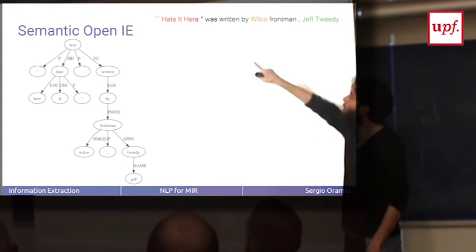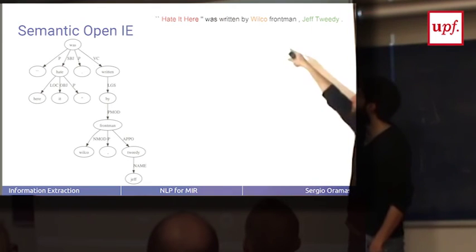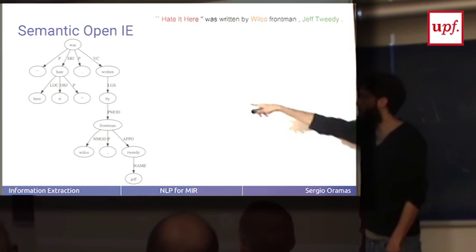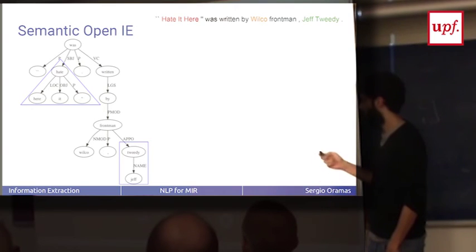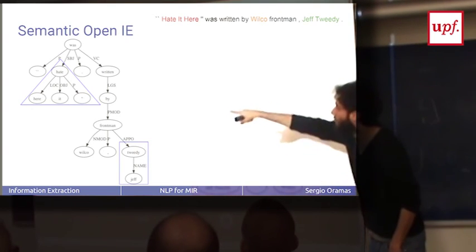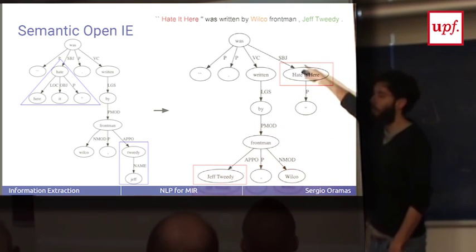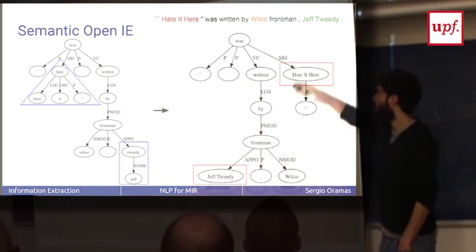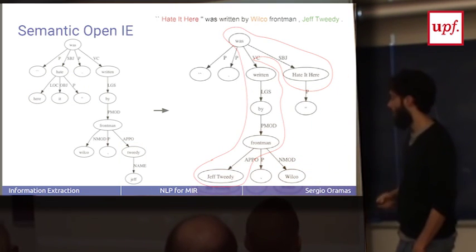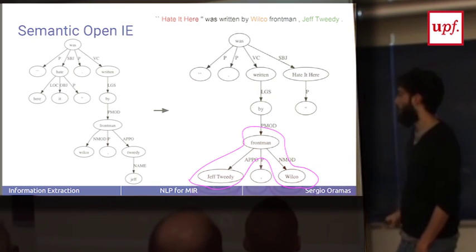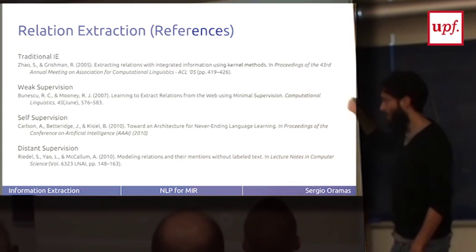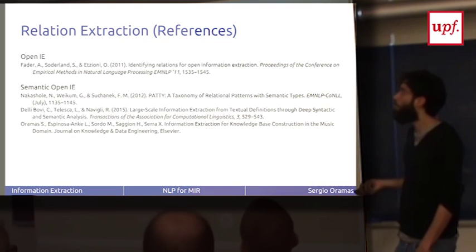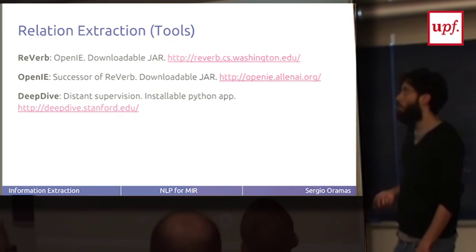We have also entity linking applied, so we know that Hated Here is an entity of type song, Wilco is an entity of type band, and Jeff Tweedy is an entity of type artist. What we do is we collapse the nodes in the dependency tree that belong to the same entity. These nodes, all Hated Here, we put as a single node. Jeff Tweedy, we put as a single node. Then we can find the path between the entities in the dependency graph: 'Hated Here was written by Jeff Tweedy' or 'Jeff Tweedy is the frontman of Wilco.' This is the idea. Here you have more references for different approaches for relation extraction in case you want to go deep into that. And here are some links to the tools for doing relation extraction.